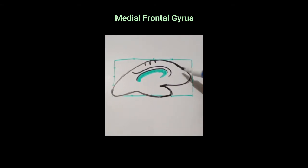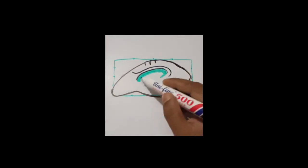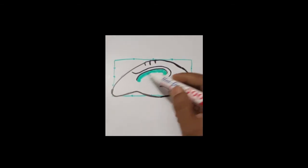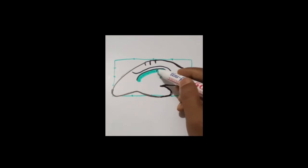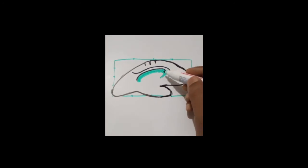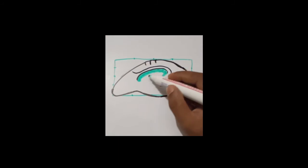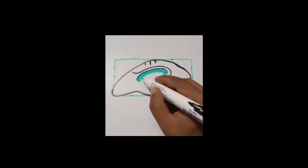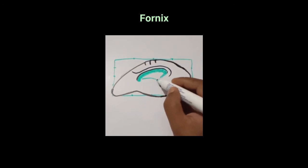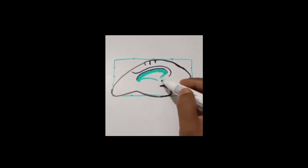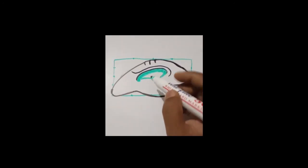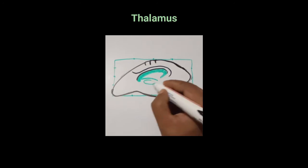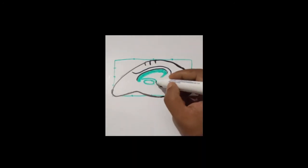Now coming back to the corpus callosum: here is the rostrum, the genu, the body, and the splenium. The septum pellucidum extends from the rostrum, genu, and body up to the fornix. Here is the fornix — it is white matter that curves over the thalamus.